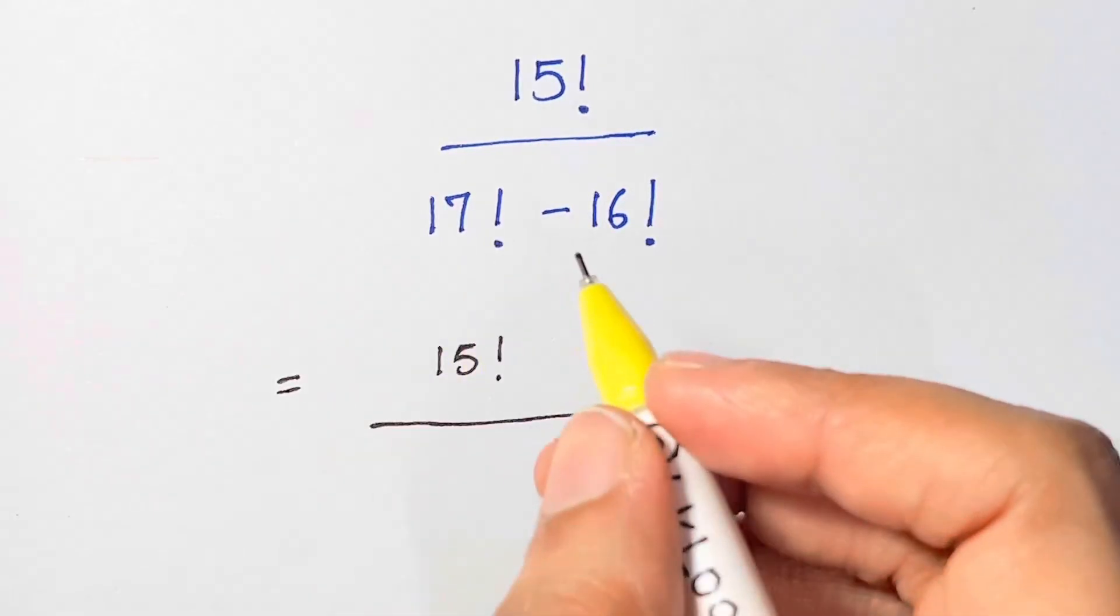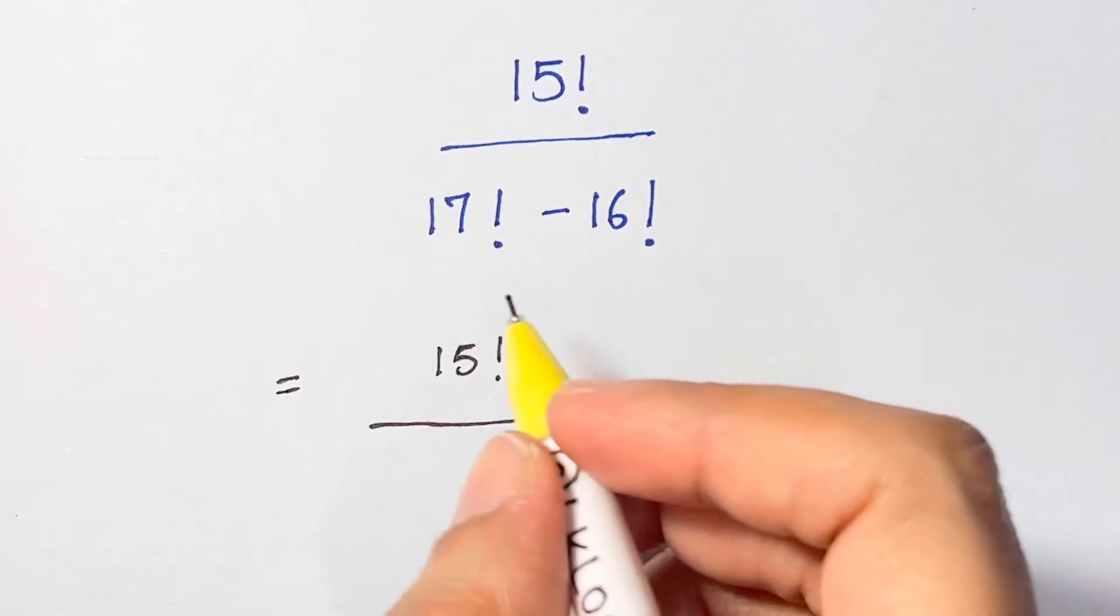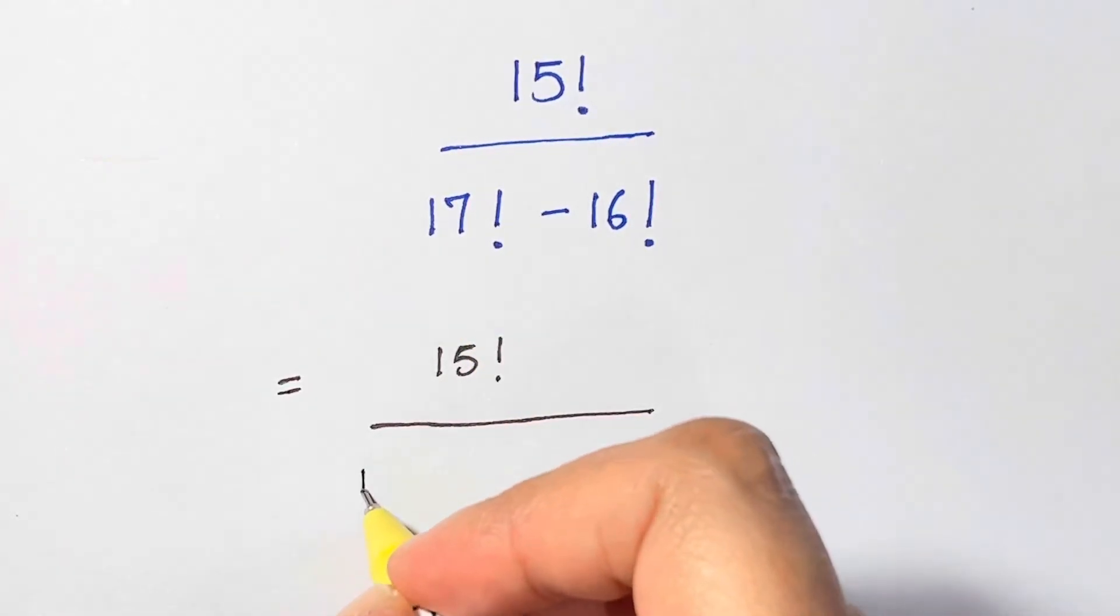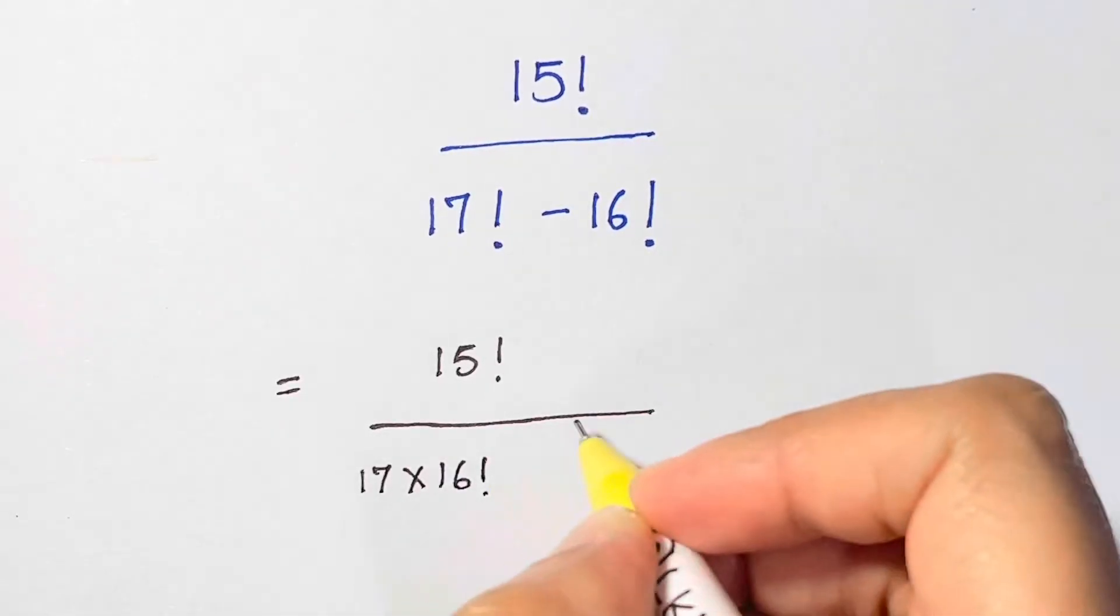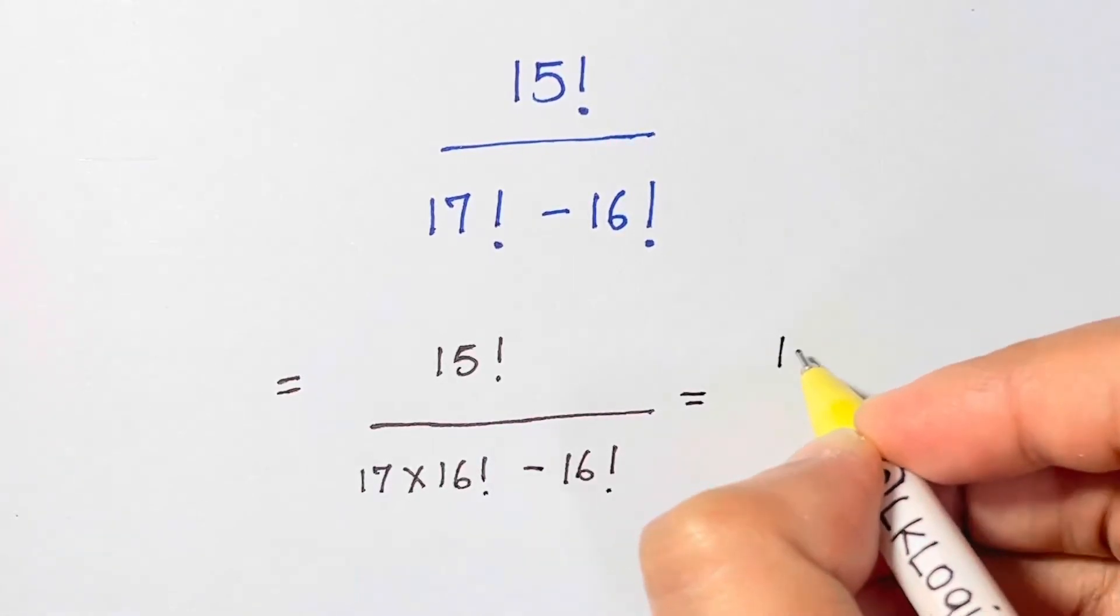What is 17 factorial? 17 times 16 times 15 times 14 times 13 times... until you go to 1. So 17 factorial can be written as 17 times 16 factorial, and minus 16 factorial.